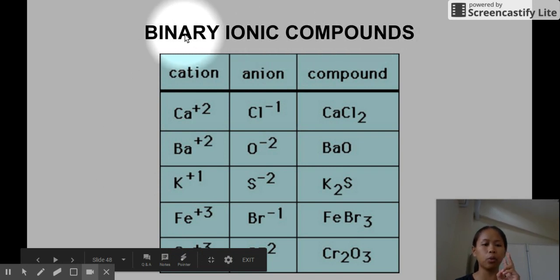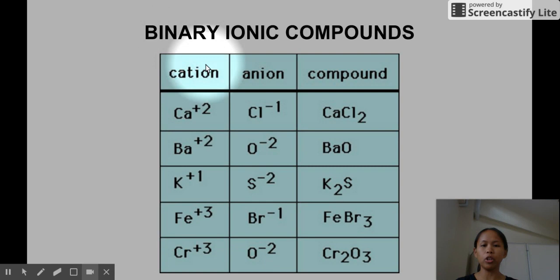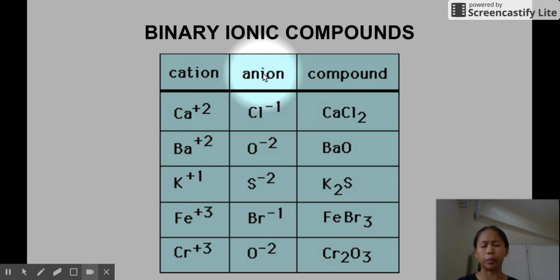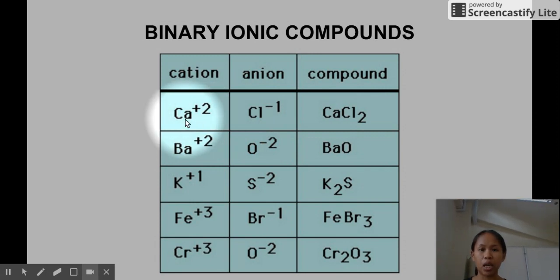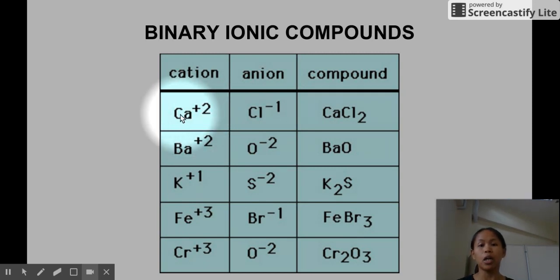Let's start with binary ionic compounds. When we talk about binary, there are only two — a monoatomic cation and a monoatomic anion. When we say monoatomic, it's made up of only one element with its corresponding charge. Most of the elements placed here are representative elements, so you need to recall the groups A and B of the periodic table, basically the s and p block elements.